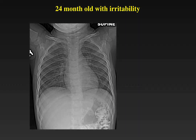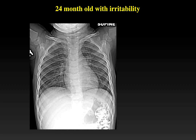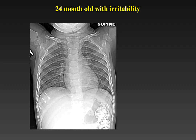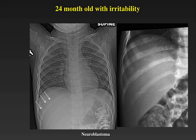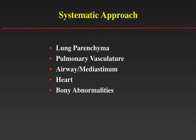Here is another two-year-old who presents with irritability. On initial inspection, the heart, mediastinum, lungs, and overlying ribs look normal. But if we focus on the right 10th rib, its density is different from the surrounding ribs. On a more focused view, it has a moth-eaten appearance with patchy areas of lucency and density because it is being eroded and invaded by a neuroblastoma.